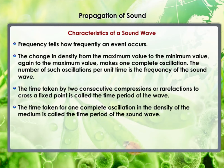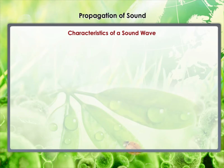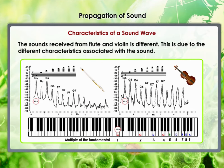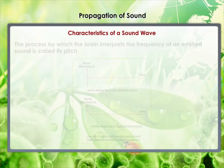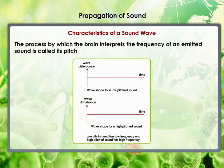A violin and a flute may both be played at the same time in an orchestra. Both sounds travel through the same medium — air — and arrive at our ear at the same time, traveling at the same speed irrespective of the source. But the sounds we receive are different due to different characteristics associated with the sound. Pitch is one such characteristic. The process by which the brain interprets the frequency of an emitted sound is called its pitch. The faster the vibration of the source, the higher is the frequency and the higher is the pitch. A high pitch sound corresponds to more compressions and rarefactions passing a fixed point per unit time.